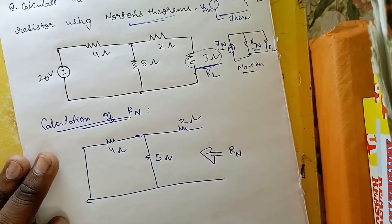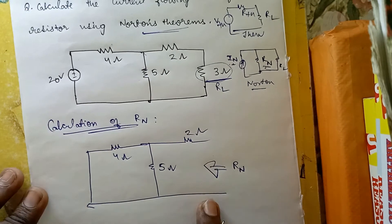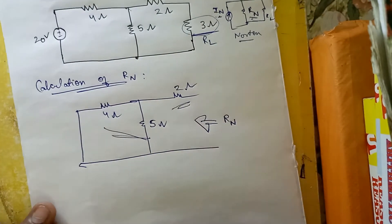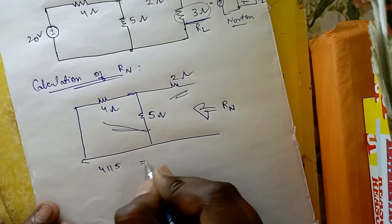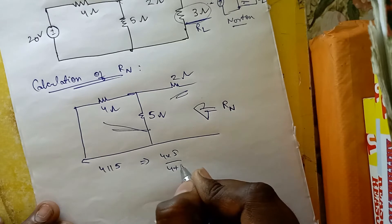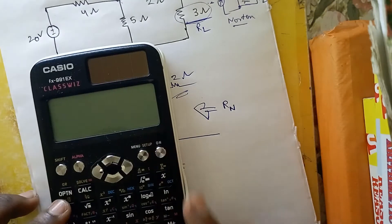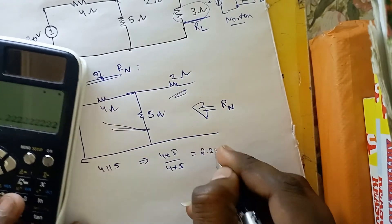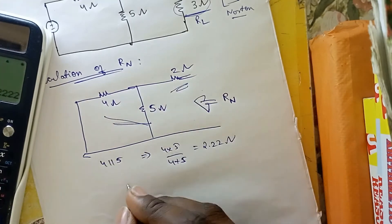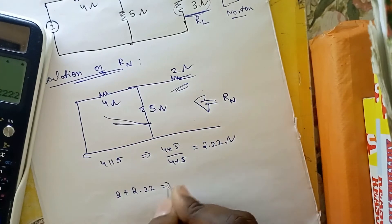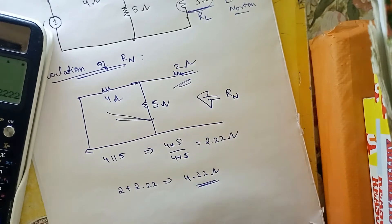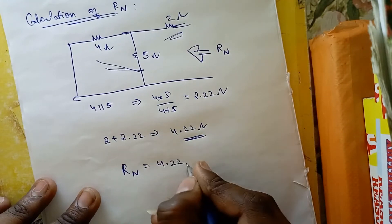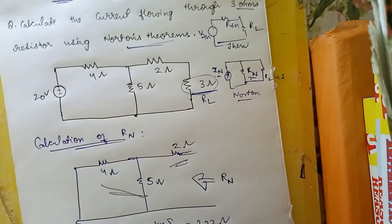To calculate Rn, same as Thevenin's theorem: 4 ohms is in parallel with 5 ohms, giving 4 × 5 / (4 + 5) = 2.22 ohms. This 2.22 ohms is in series with the 2-ohm resistor, so 2 + 2.22 = 4.22 ohms. Therefore, Rn = 4.22 ohms.